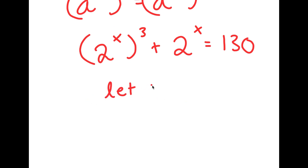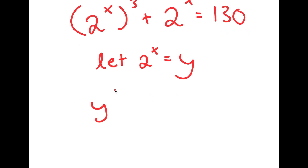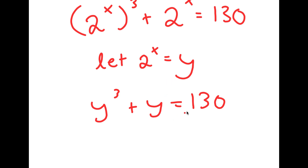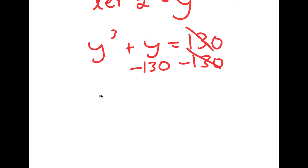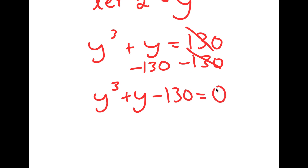Now I'm going to let 2 to the power of x equal to y. So now I have y to the power of 3 plus y is equal to 130. And if I subtract 130 on both sides, I get y to the power of 3 plus y minus 130 is equal to 0.